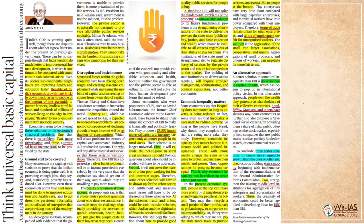Now, what is the author saying in this article? The author says that India, despite performing well economically, which is reflected in the growing GDP, needs to do much better to improve overall human development, in which it continues to be compared with countries in sub-Saharan Africa. Even its poorer subcontinental neighbors such as Bangladesh and Sri Lanka are improving health and education faster. He says benefits of India's economic growth must trickle down much faster to people at the bottom of the pyramid.